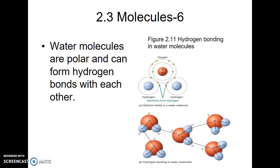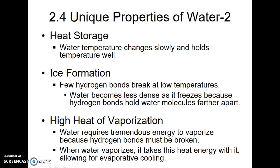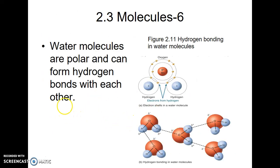A water molecule is a polar molecule, and because water molecules are polar, they can form hydrogen bonds with one another. Looking at figure 2.11 from your book, the oxygen atom is much larger than the hydrogen atoms and is able to pull the electrons closer to itself. So the oxygen atom has a partial negative charge and the hydrogen atoms each have a partial positive charge. The positively charged hydrogen atoms are attracted to the negatively charged oxygen atoms, and this hydrogen bonding is what gives water many of its unique properties.